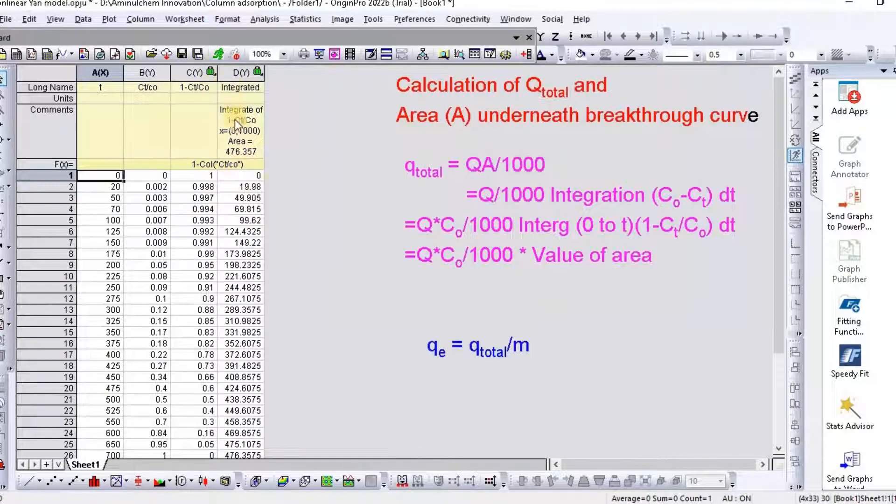So see, here is the integrated value from 0 to 1000 and area is 476.357. This is the area.